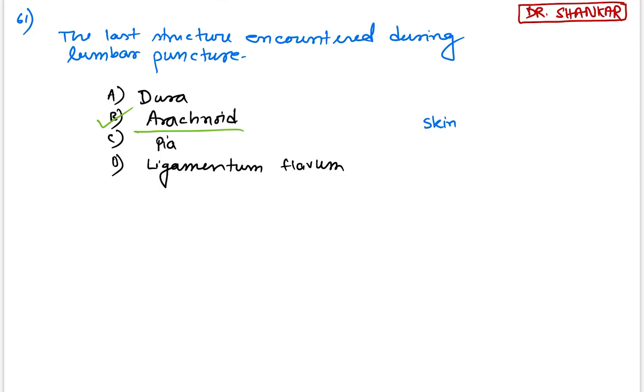First of all, it is skin, then superficial fascia, then supraspinous ligament, then interspinous ligament, then ligamentum flavum, after ligamentum flavum it's dura mater, next arachnoid mater and in the subarachnoid space you will find CSF. So the last structure encountered during lumbar puncture to obtain CSF is nothing but arachnoid among the options, the last structure pierced.